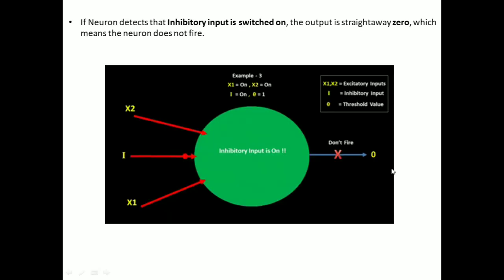In the third case, if the neuron detects that the inhibitory input is switched on, the output is straight away 0, meaning the neuron does not fire. Here, excitatory inputs x1 and x2 are on, but the inhibitory input i is also on. Because the inhibitory input is on, the neuron does not consider x1 and x2 at all and simply will not fire. The output is therefore 0, and these are the different example cases of how a McCullough-Pitts neuron works.